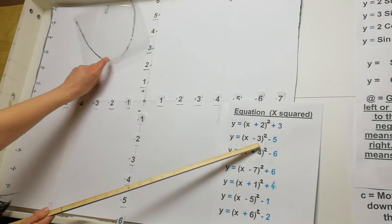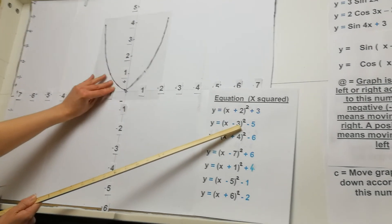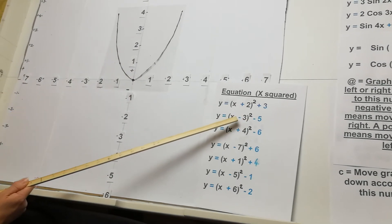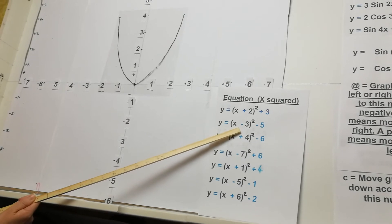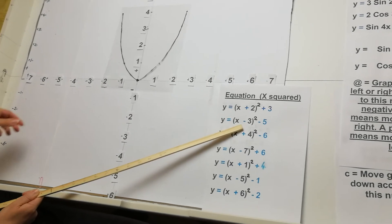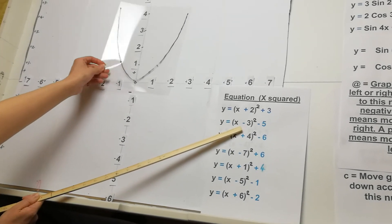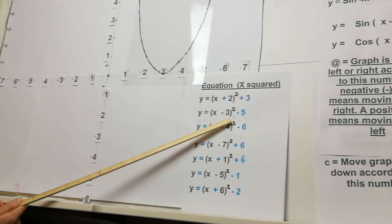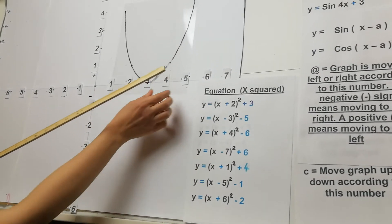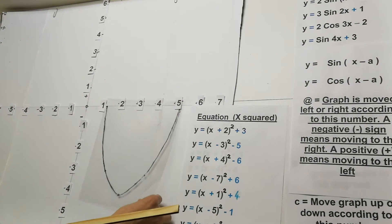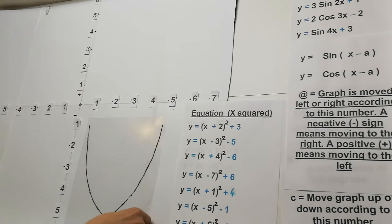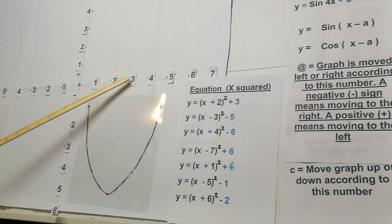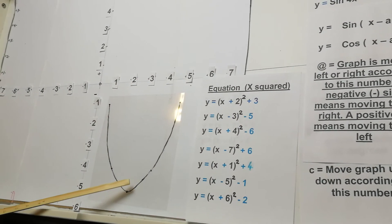The next one we've got here, so I'll always recenter the graph to here. We've got x take away 3 all squared, take away 5. So take away 3 means moving to the right by 3. And take away 5 means moving down by 5. So this is where it would be. So the turning point is basically 3, negative 5.